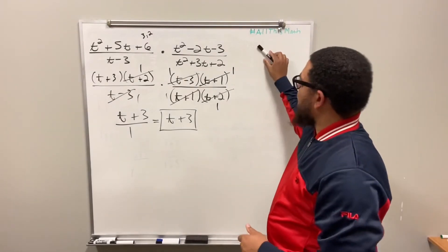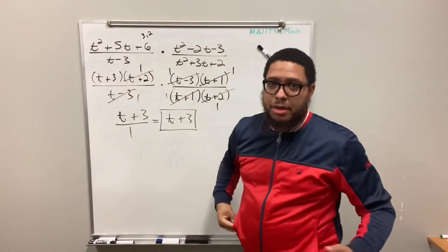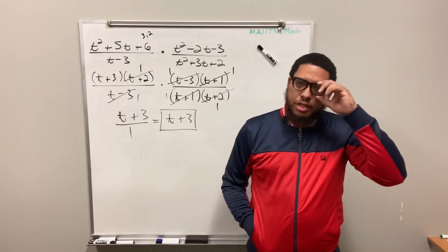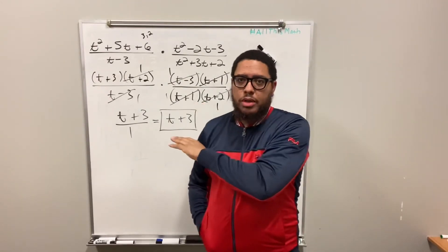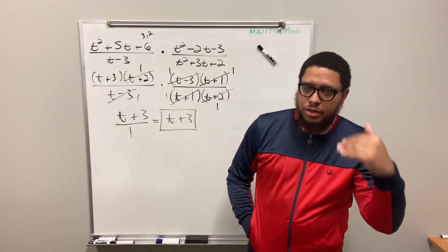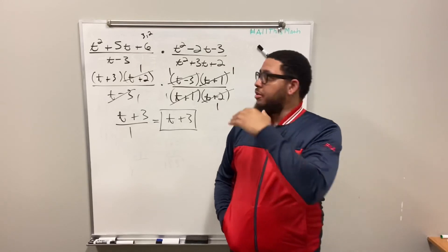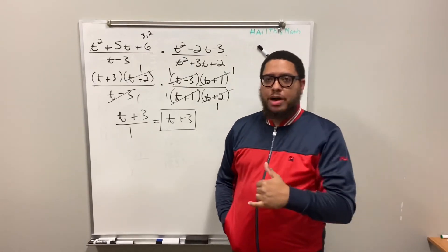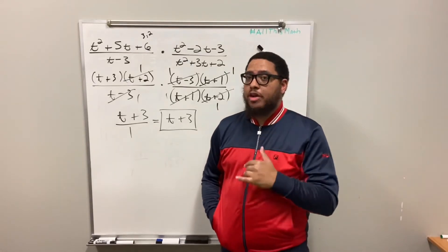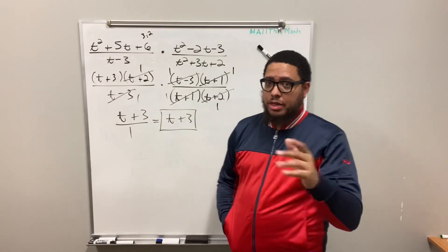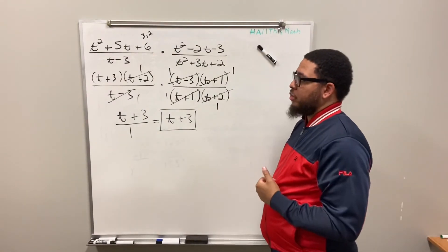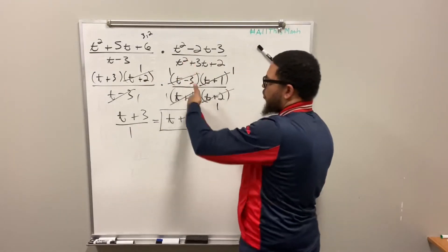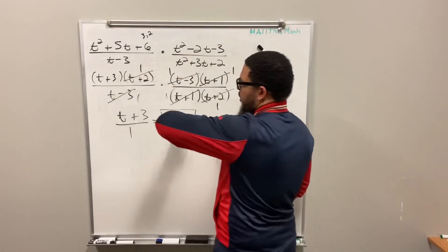And that's how we multiply rational expressions — it ain't much to it. But like I said, you've got to know how to factor. If you know how to factor, this will be straightforward. You'll be able to do these problems with confidence. The only other thing you need to know is how to cancel things out — either vertically or diagonally.